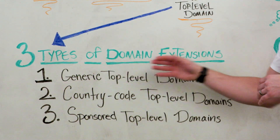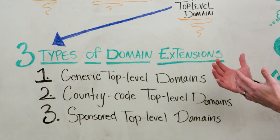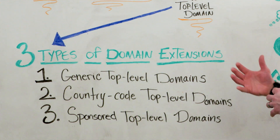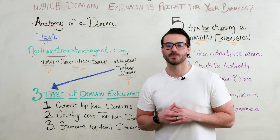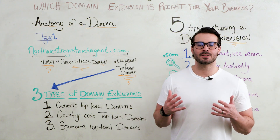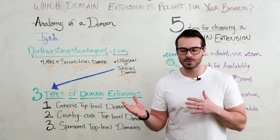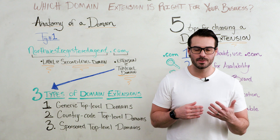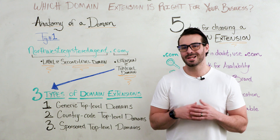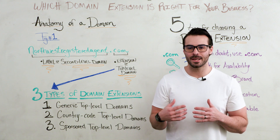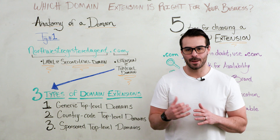Let's talk about the three types of domain extensions. The first one is generic top level domains. These extensions are not restricted to industries or companies — they include .com, .co, .net, and things like that.